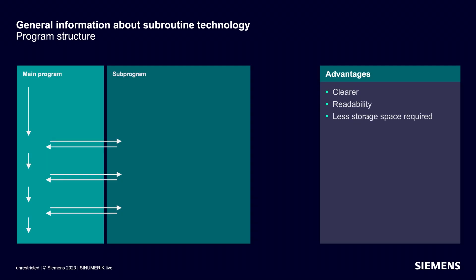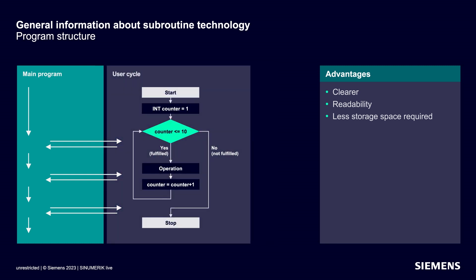Why do we use sub-programs and what advantages does this give us? After all, you could also code the production order linearly in just one CNC program. So why would you write sub-programs or your own user cycles? The reason is that using sub-programs makes for clearer, more easily readable programs which also require less storage space. And another big advantage of user cycles is that you can access already tested parameterizable program sections.